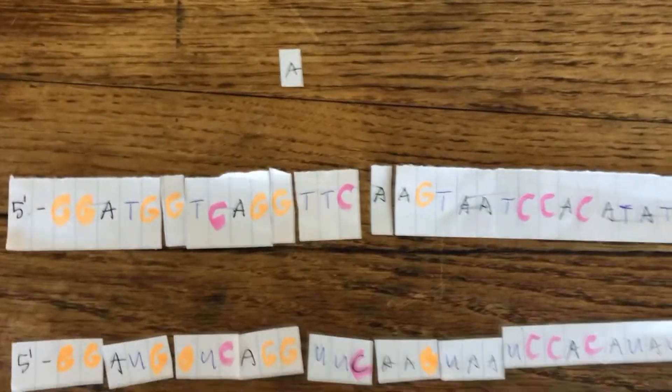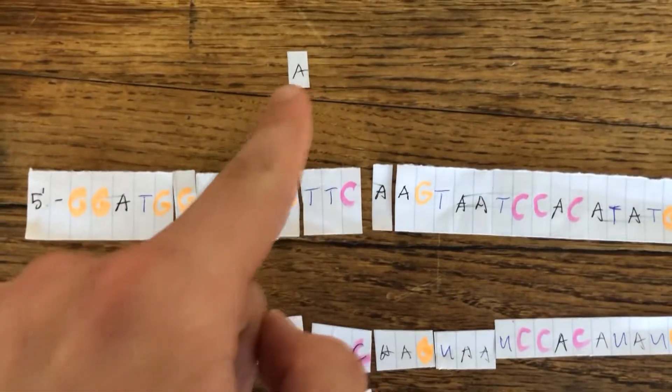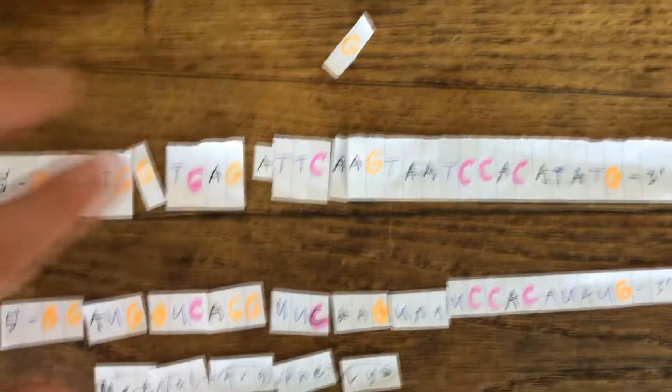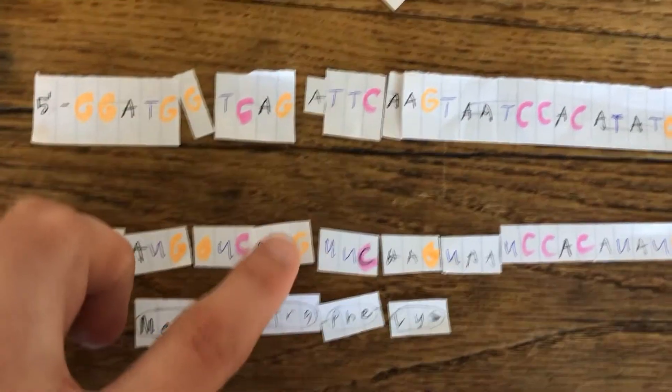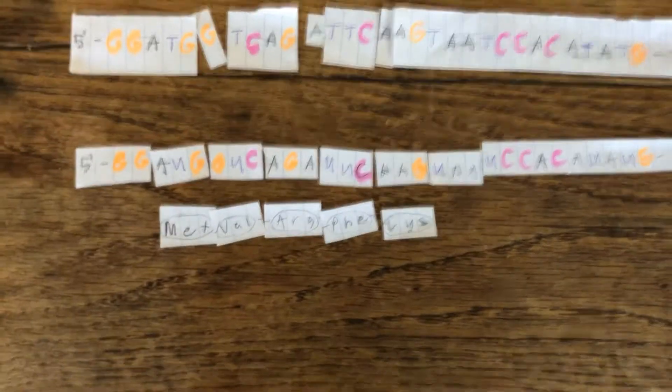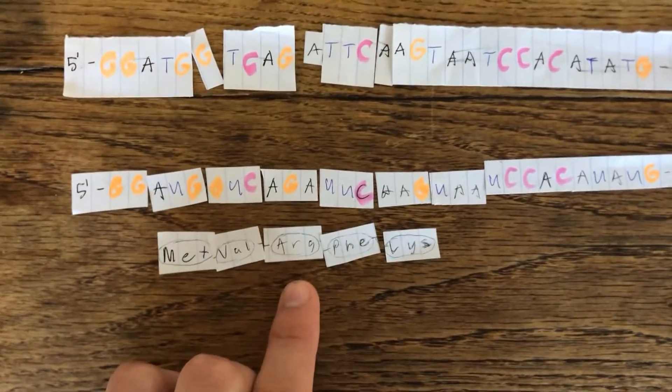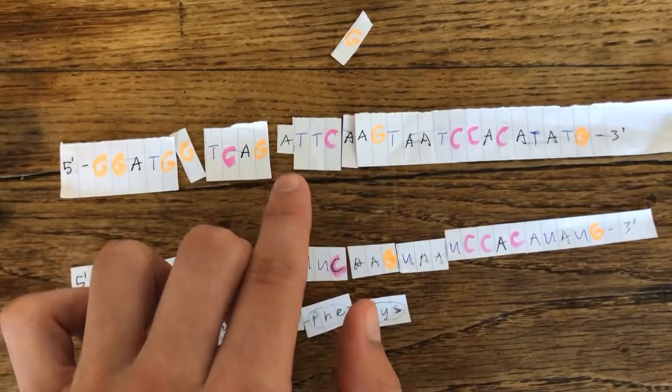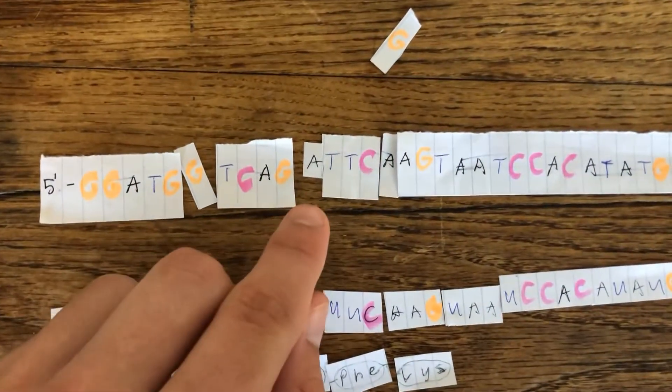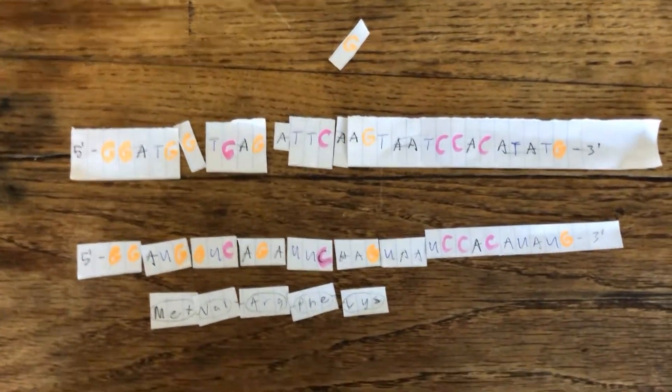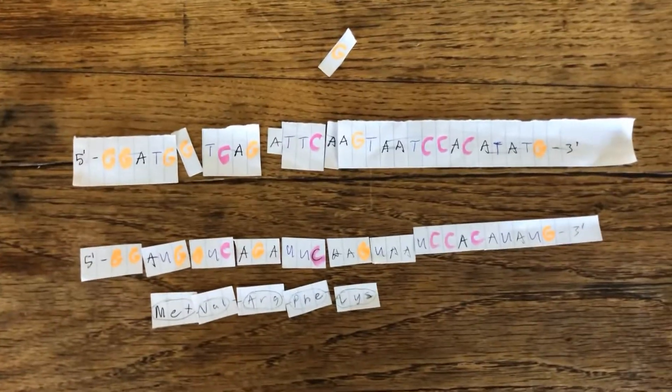For our third mutation, which would be a silent mutation, let's say we were to replace this G with an A. Now with this mutation, our codon is going to be changed from AGG to AGA, which would not change the translation of this amino acid. So we'll still get arginine, and we'll still have the same protein, even with this mutation, due to this third wobble base. Now this would be a transition, because it's from a G to an A, and it will result in a silent mutation.